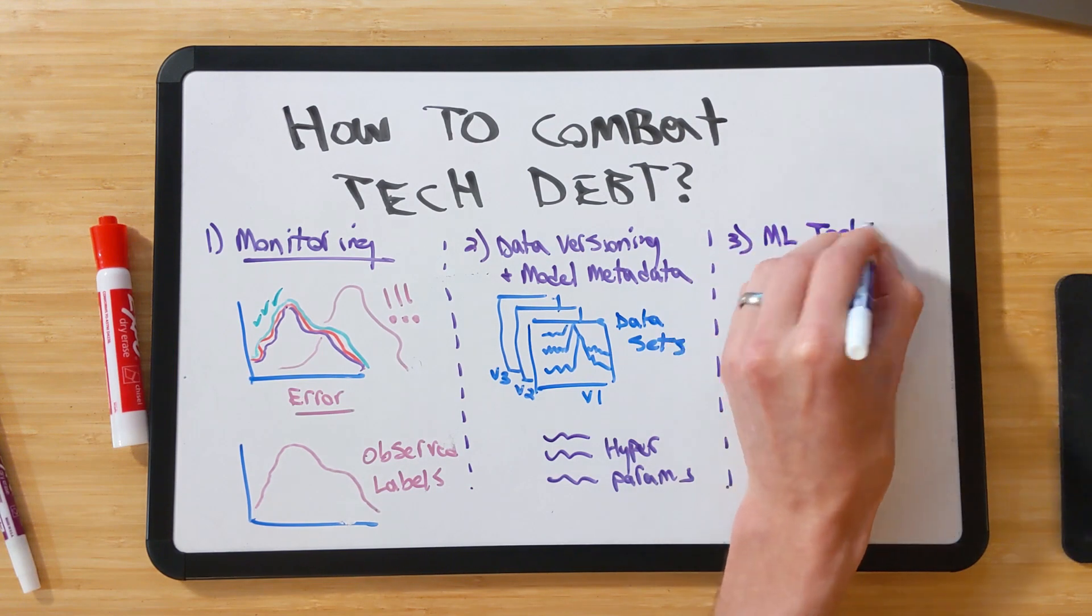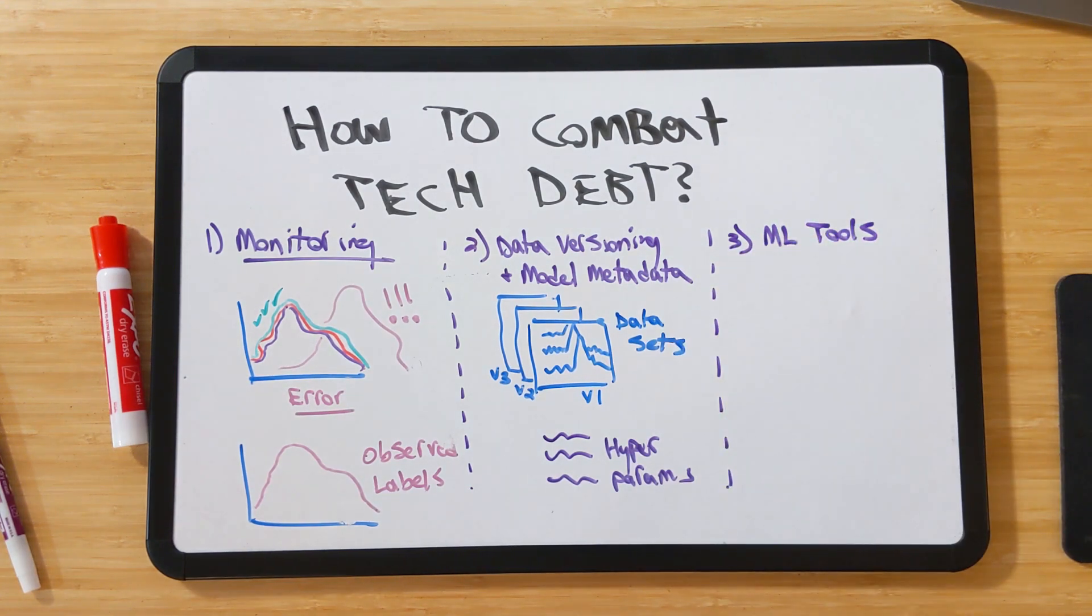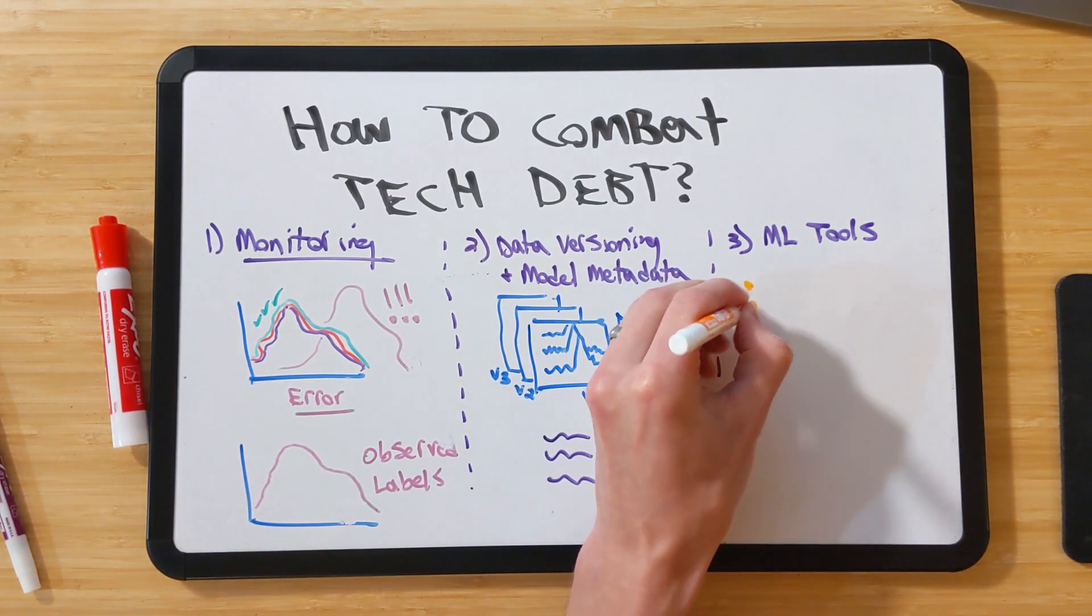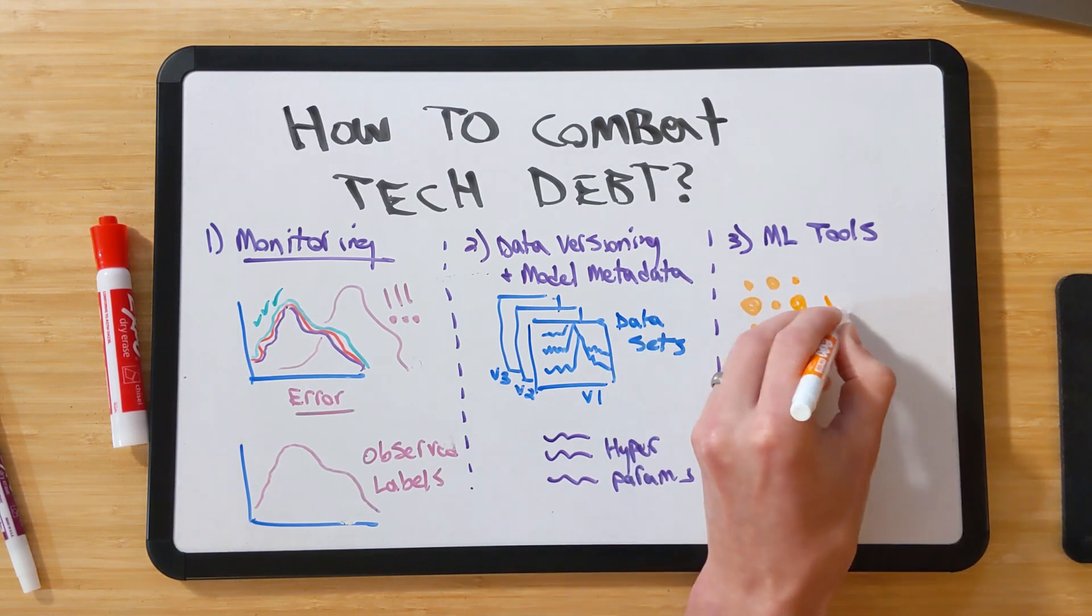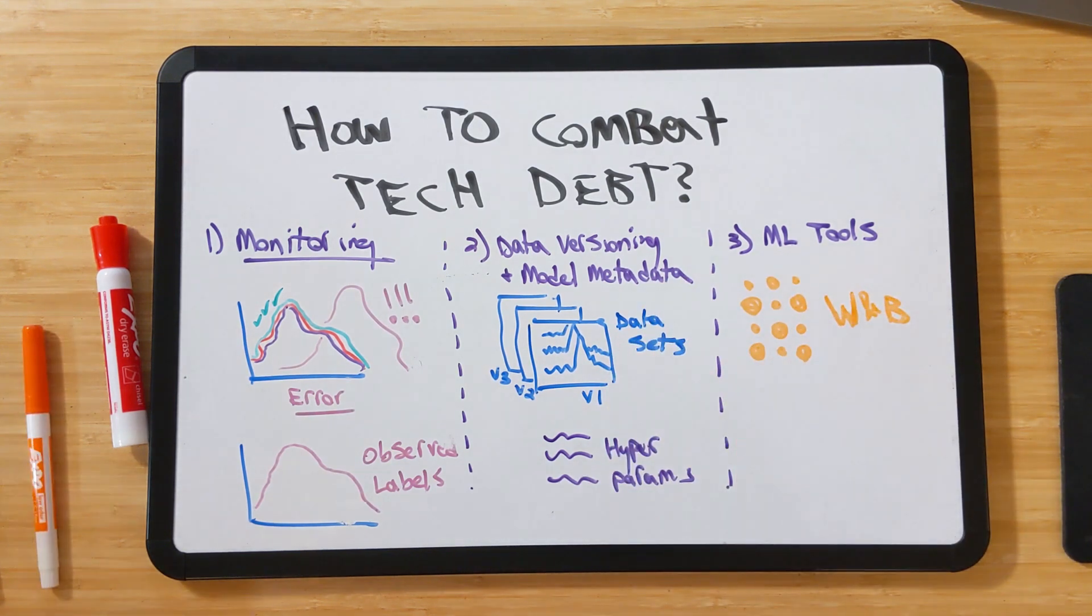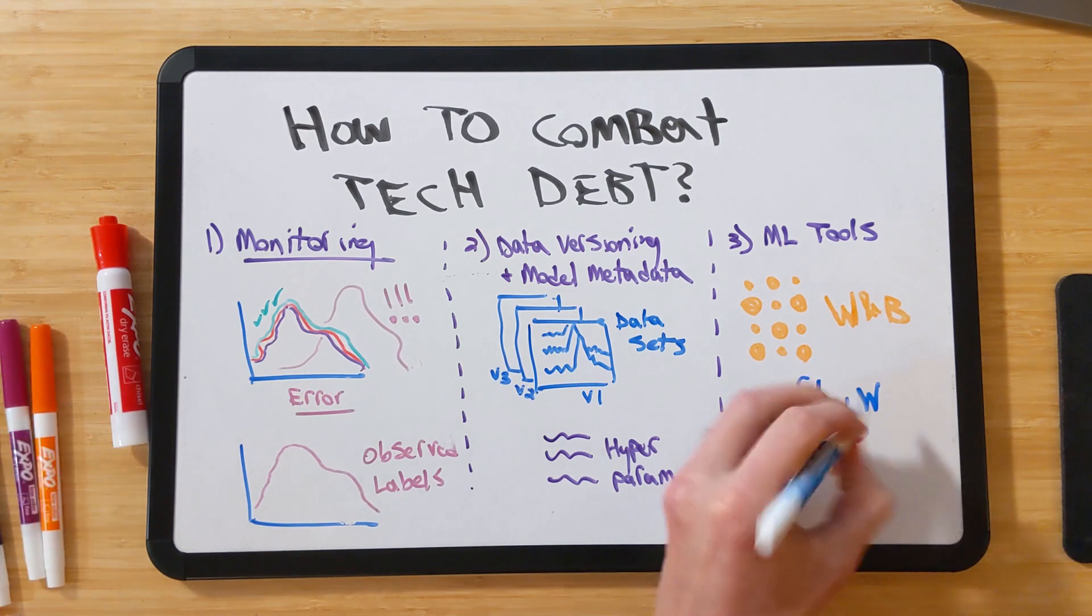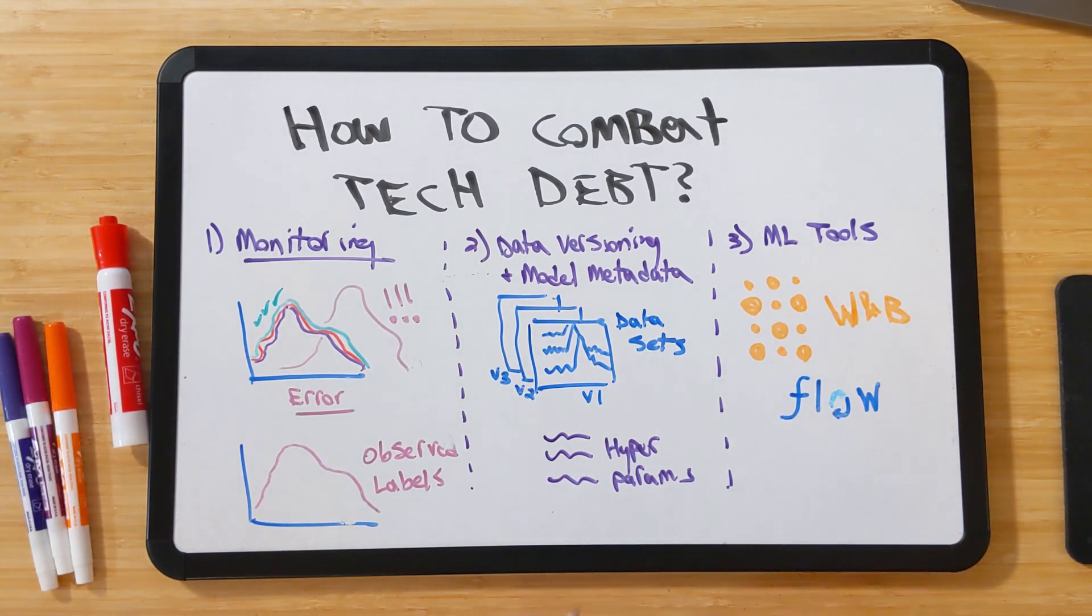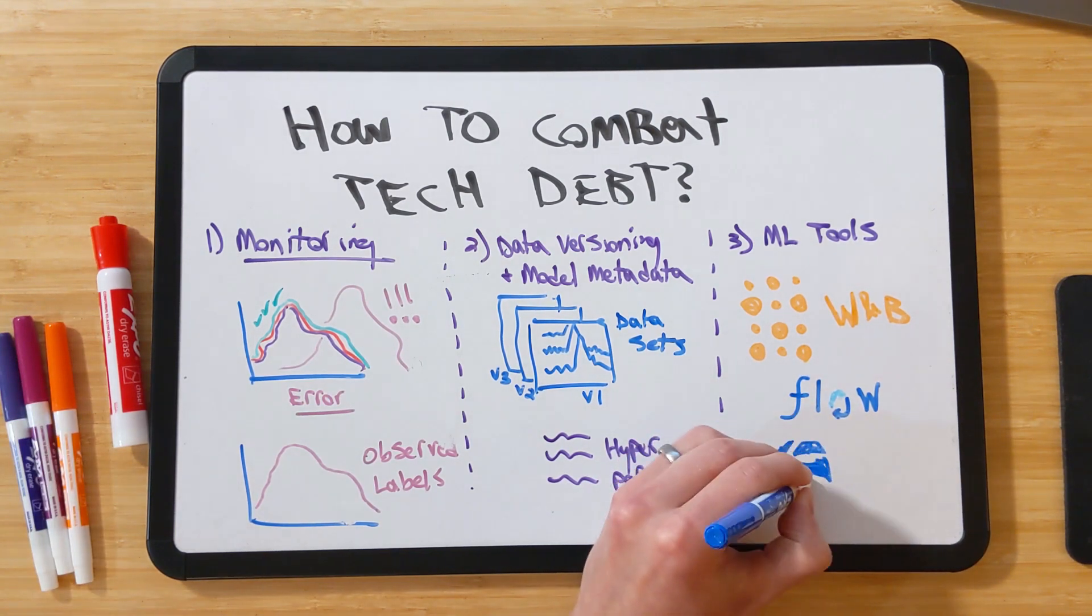Also, there are a number of tools that are being developed that can help address certain pain points from across the machine learning engineering life cycle. These include products like Weights and Biases for experiment management, MLflow for model management, or Cubeflow for entire life cycle support.